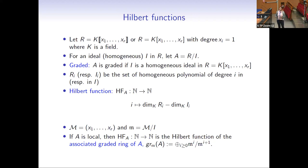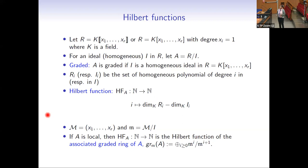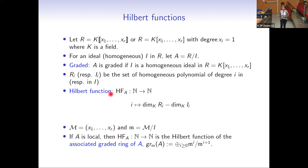I denote by R_i the i-th degree component of the ring R, and by I_i I mean the degree i component of the ideal I, which consists of all homogeneous elements in the ideal I. So by the Hilbert function of the graded ring, we mean a numerical function from natural numbers to natural numbers, which takes the integer i to the dimension as a k-vector space of the i-th component of A, which can be computed as the dimension of R_i minus the dimension of I_i as k-vector spaces.